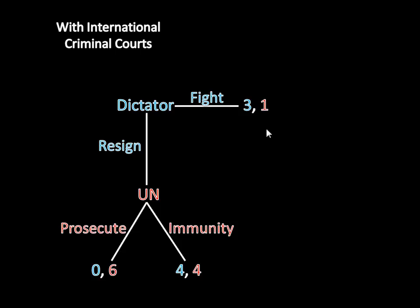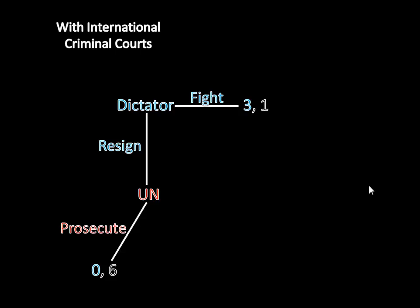We solve this game with backward induction, starting at the bottom and working our way up. We imagine the dictator resigns and see what's optimal for the United Nations: it gets 6 for prosecuting and 4 for granting immunity. Since 6 is greater than 4, if the dictator resigns, the United Nations would prosecute him. Backtracking, if the dictator resigns, the United Nations prosecutes him and he gets 0. Alternatively, he can fight and get 3. So fighting is better than resigning and being prosecuted.